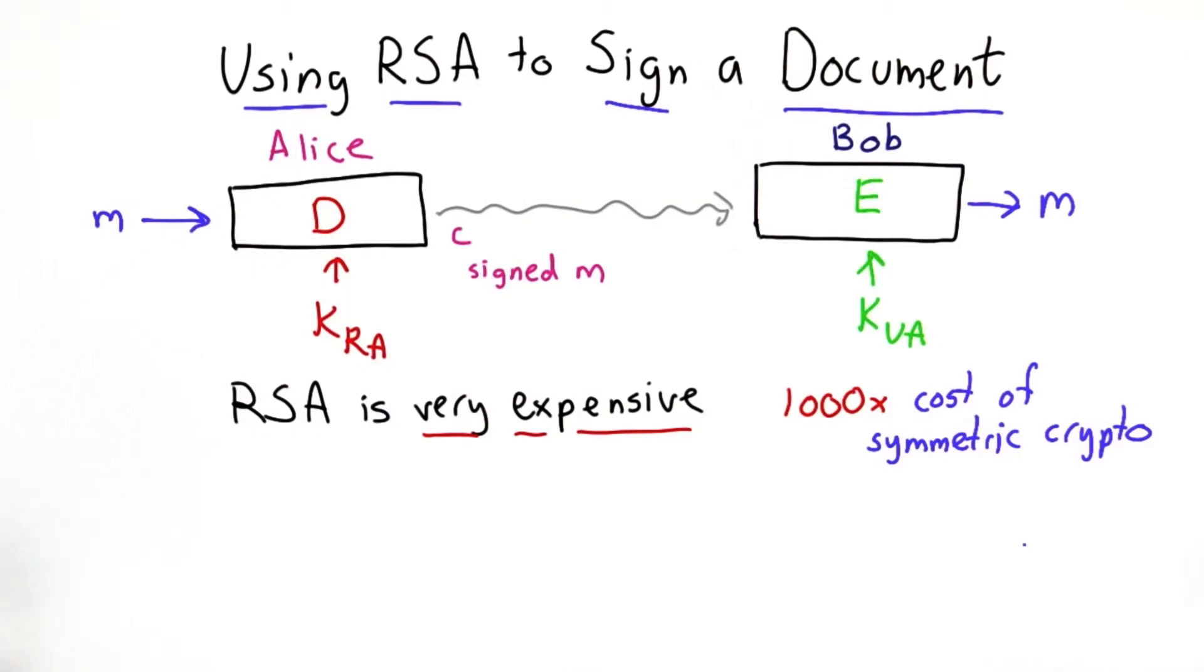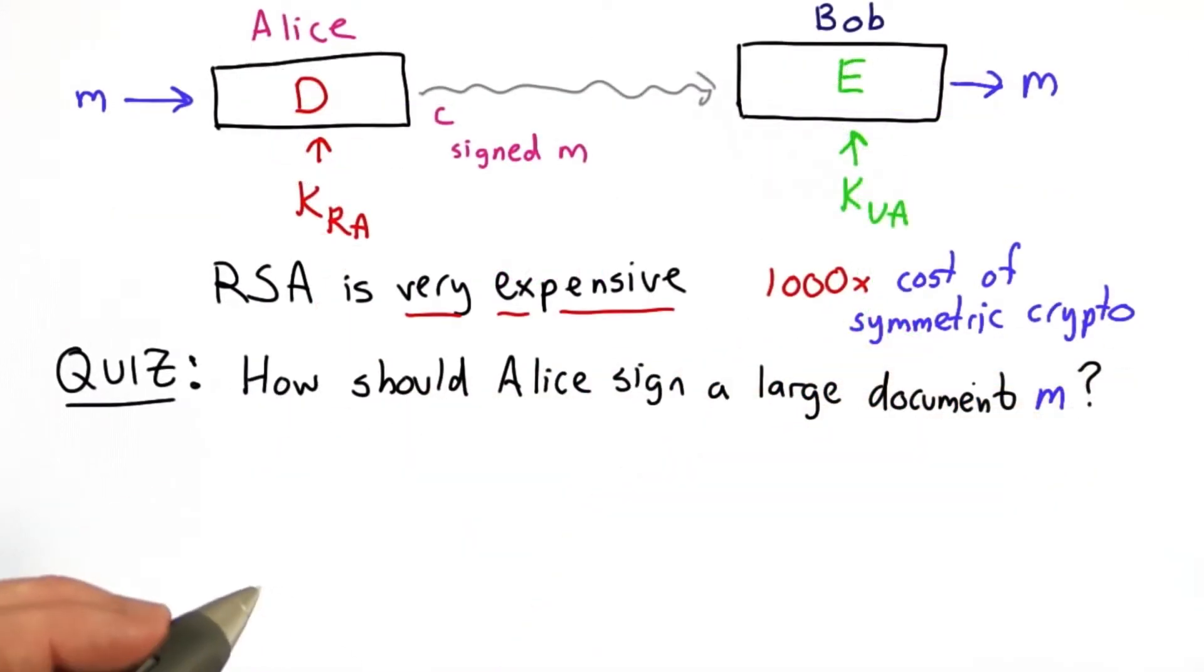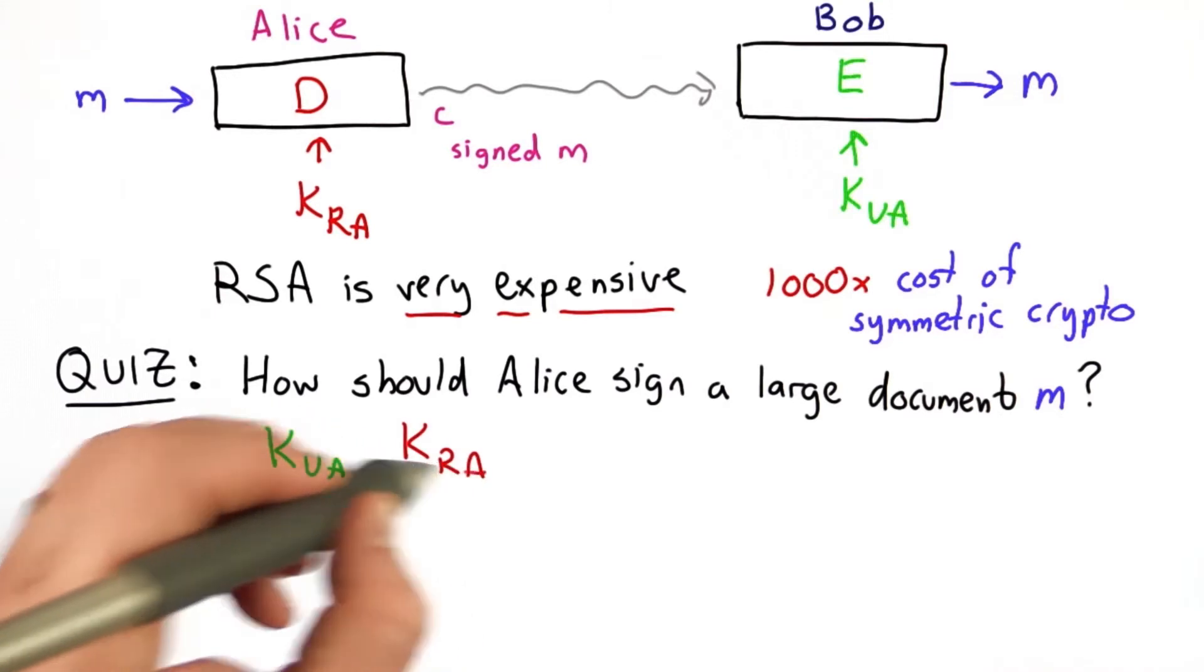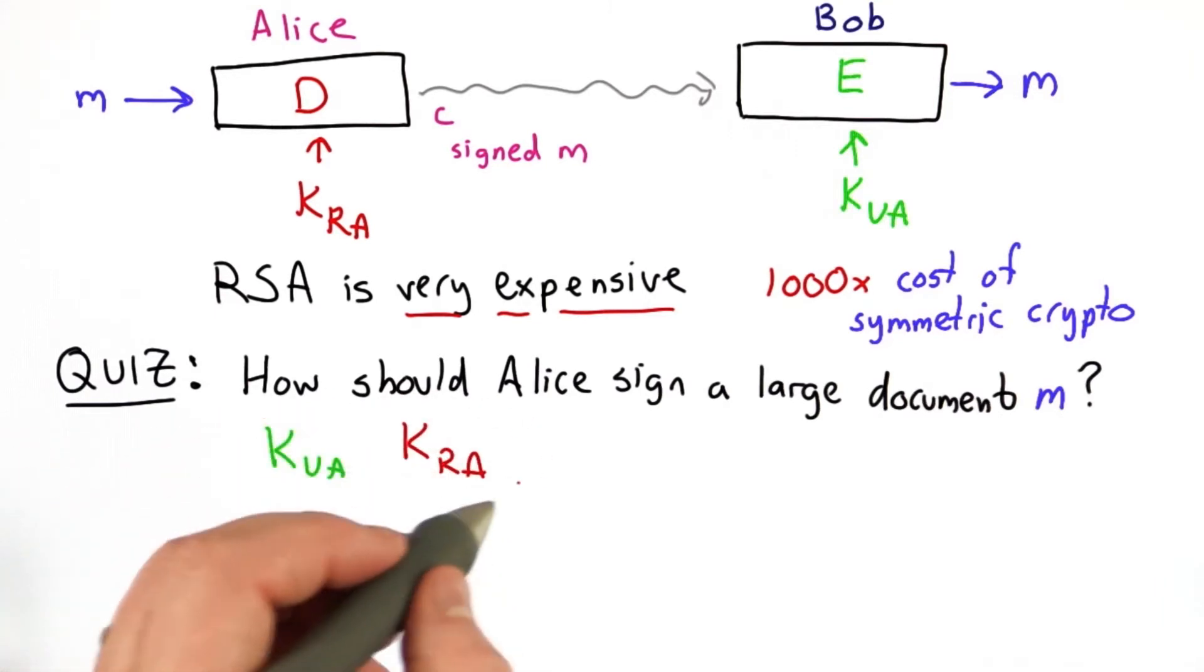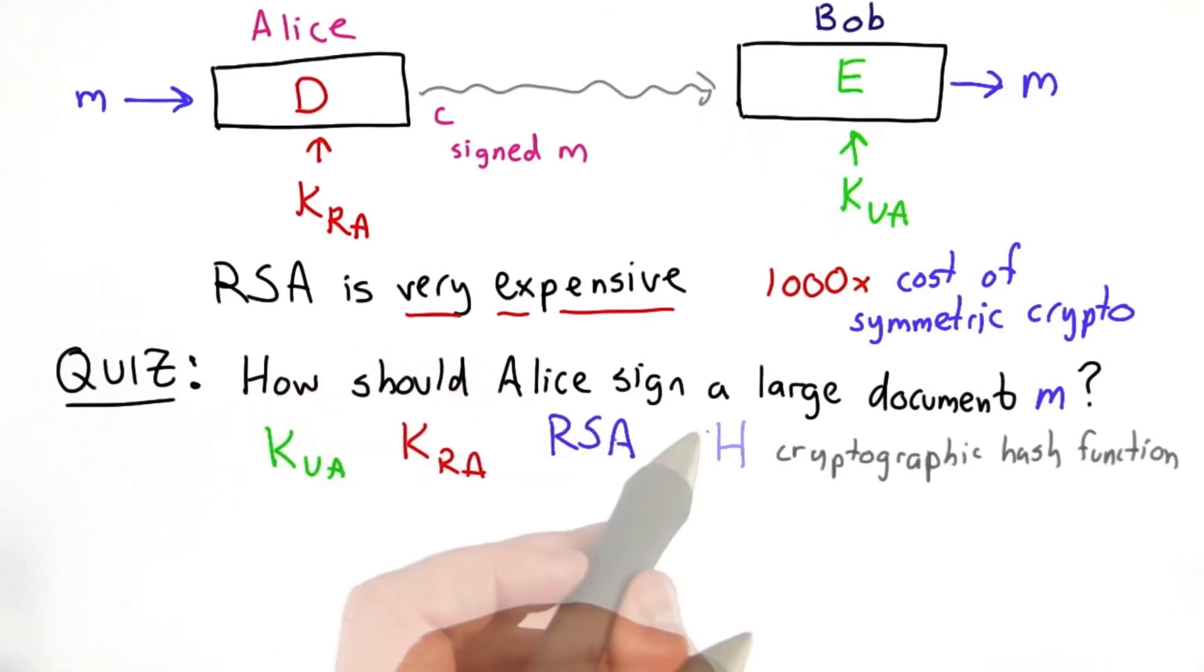We need to do something else. So the question is, how should Alice sign a large document M? We'll assume that Alice has a public key known to anyone who wants to read the document, a private key known only to Alice, an implementation of RSA, and H, a secure cryptographic hash function.